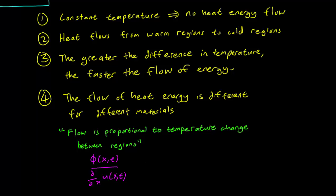So flow is represented by phi x t, we learned that in the first video. And the temperature change between regions is represented as the partial x-derivative of u x t.